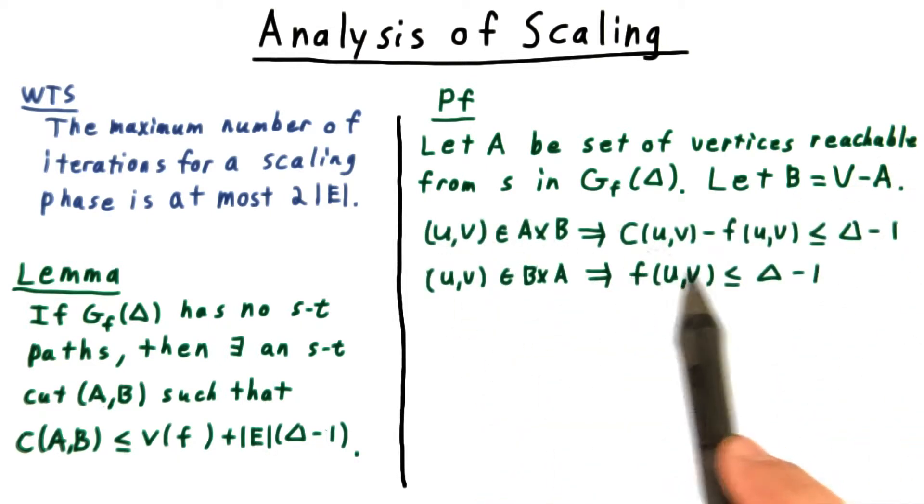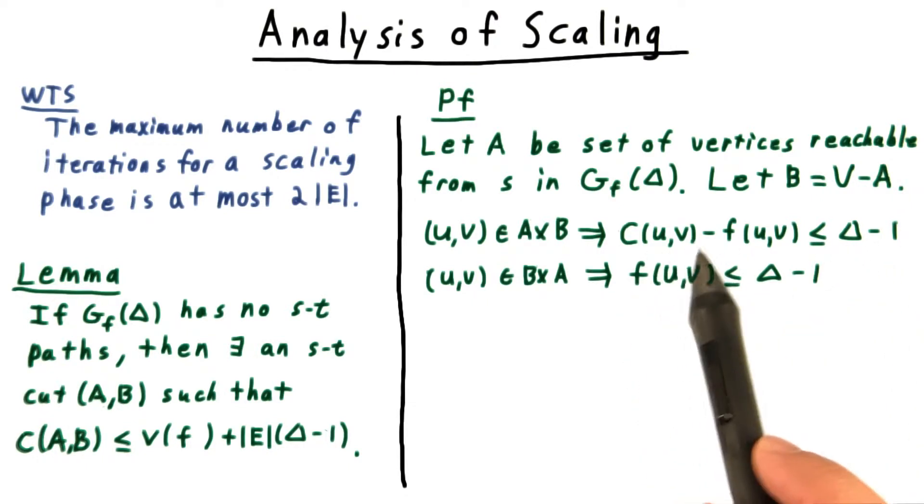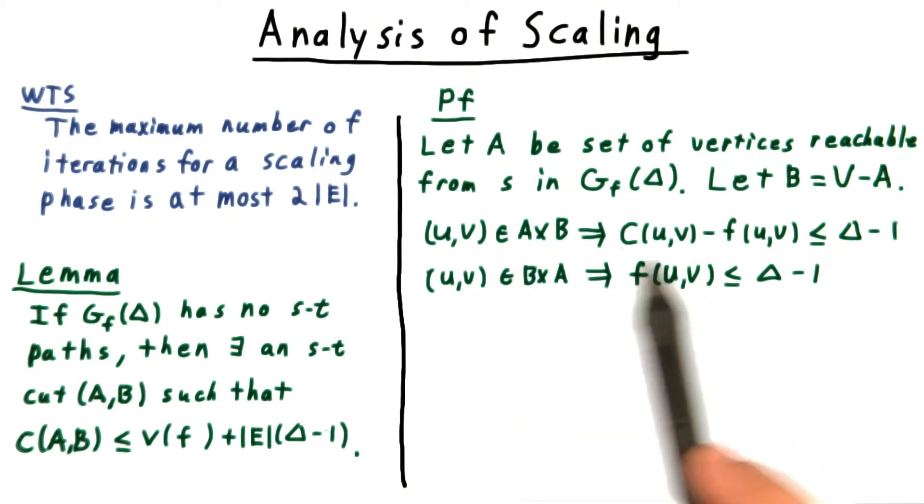Edges from A to B in this graph must have residual capacity at most delta minus 1. Otherwise, the vertex in B would be reachable from the source S, and hence a part of A.